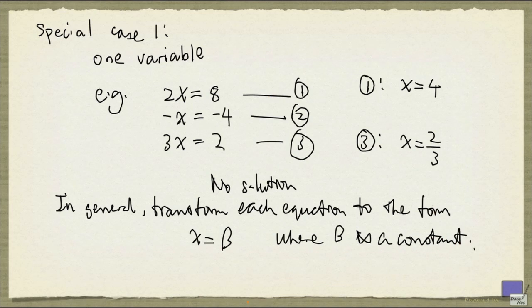And then all we have to do is we just look at whether all the betas are equal. If they are not, then there's no solution. If they are, then beta is the solution.